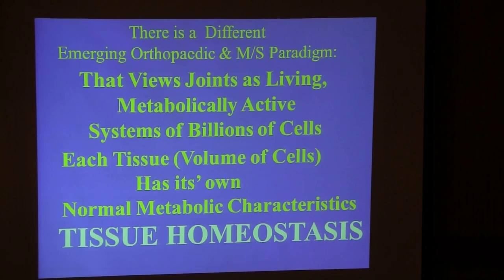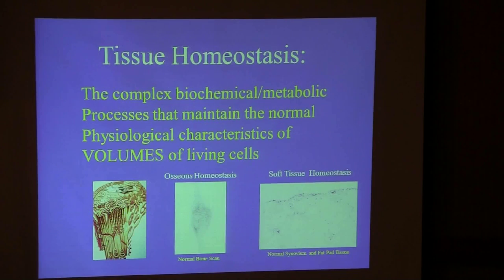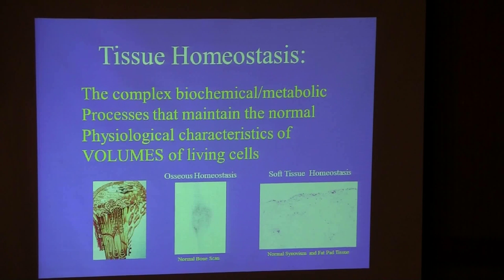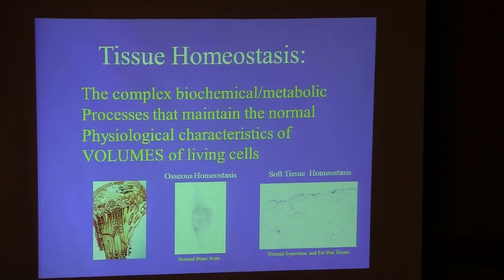There's a different emerging orthopedic and musculoskeletal paradigm that views joints as living, metabolically active systems of billions of cells, where each tissue or volume of cells has its own normal metabolic characteristics. The term we use is tissue homeostasis — the complex biochemical and metabolic processes that characterize volumes of living cells. This is best imaged in bone with a standard technetium bone scan.